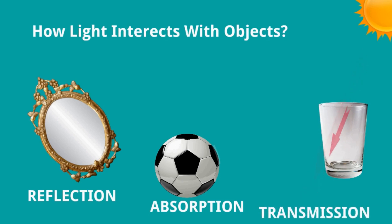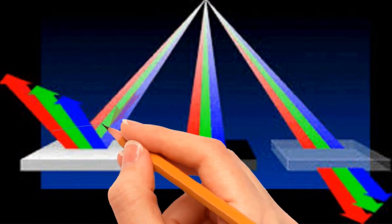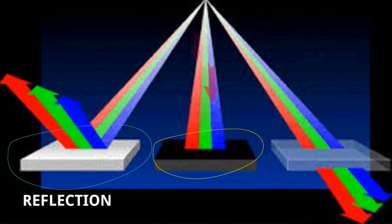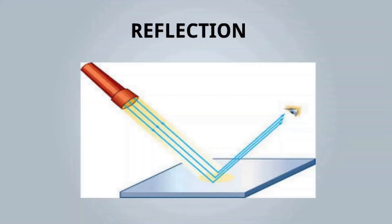For the glass, light is simply passing through — there is no reflection, it is transmission. In a simple diagram: for reflection, light comes from the source and bounces off the object. For absorption, the object absorbs all light from the source. For transmission, the object allows light to pass through completely.